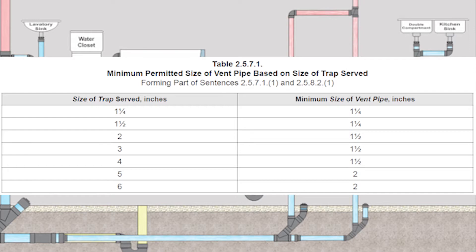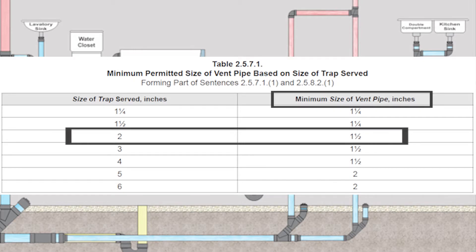The best part about table 2.5.7.1 is that it is very easy to read. If you look on the left-hand column it says the size of traps served. Now we're looking at the clothes washer that has a two inch trap. So I go down to two inches then I go across to the right. Minimum size of vent pipe is one and a half inches.